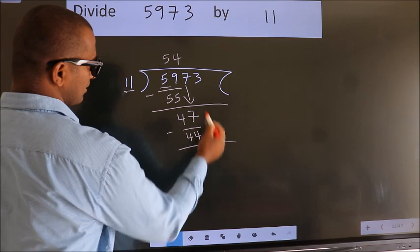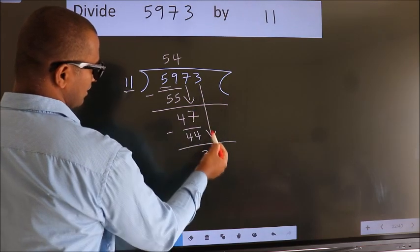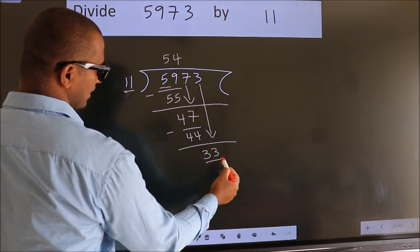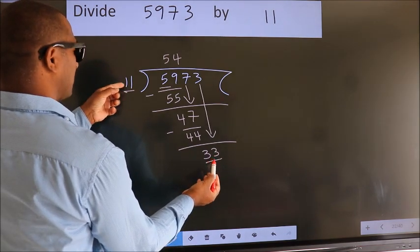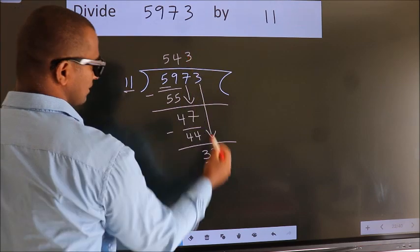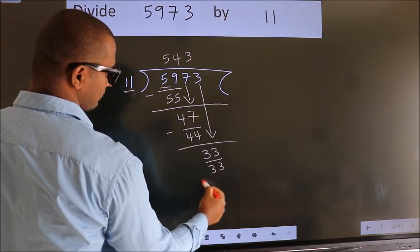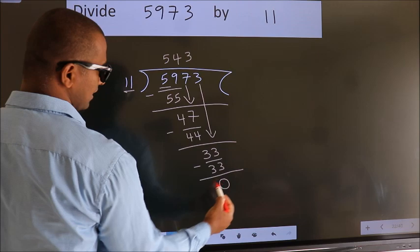After this, bring down the beside number. So, 3 down. 33. When do we get 33 in the 11 table? 11 threes, 33. Now we subtract. We get 0.